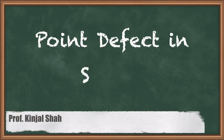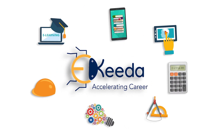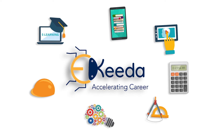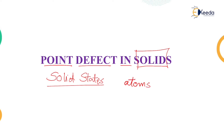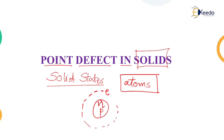Hello students. In today's class we are going to learn about point defects in solids. When we talk about solids, we are talking about a solid state. These solid states consist of different kinds of metals and non-metals, which are solid because of the virtue of their atoms being in certain positions. These atoms contain neutrons and protons in the middle and then electrons which are moving around in the orbit.